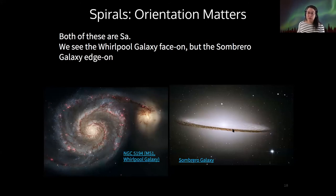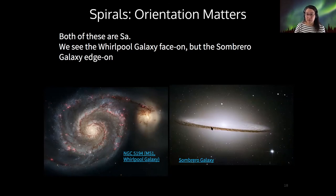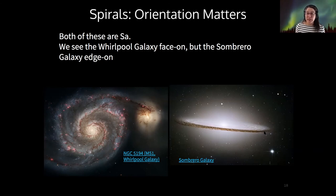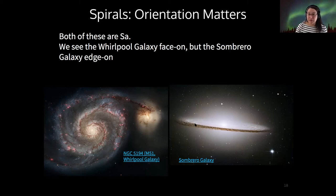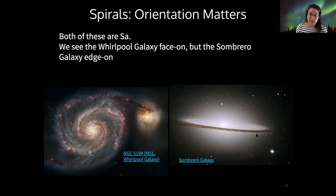The other big indicator is that it has lots of dark dust — all this dark shading in this image is dust. Spirals are very rich in gas and dust, whereas ellipticals are not. So by looking for the dust and the flat disk shape, we can see that the Sombrero is indeed a spiral galaxy, even though we can't really make out its arms.